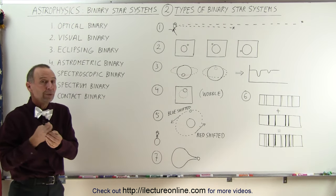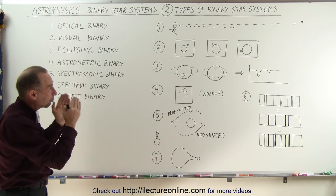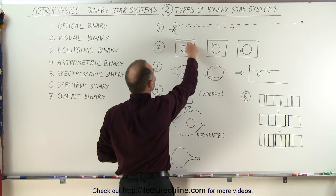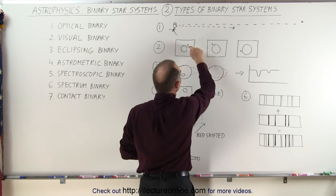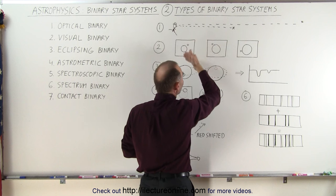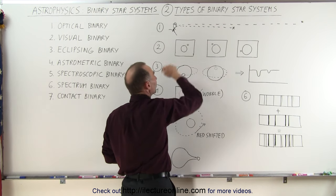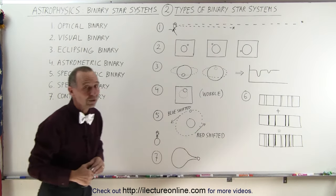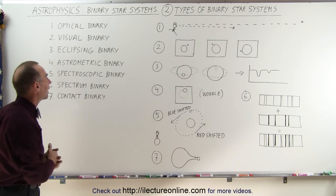Visual binaries are where we actually do have a binary star system, and as we're taking photographs of them over time we can see one of the stars moving around the other. Sometimes this takes days, weeks, months, or years depending on how far they are apart and what their masses are. We can then take pictures and see that it is indeed a binary star system — we have a visual picture of them, so we call them visual binaries.